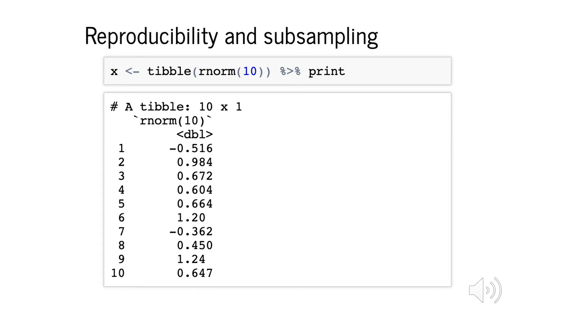For very large data frames, it's sometimes useful to subsample. We can even do that in a way that's reproducible, which we'll see from this small example. Here, I create a tibble data frame called x that just contains 10 numbers drawn from the standard normal distribution.